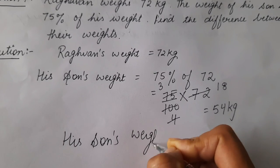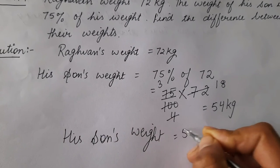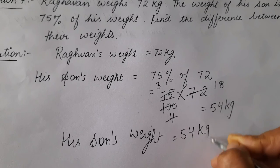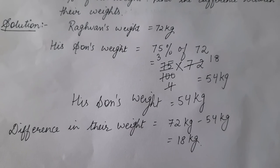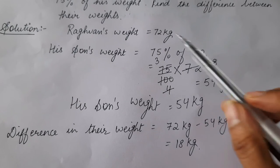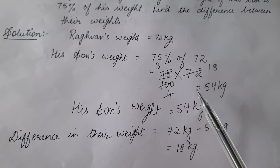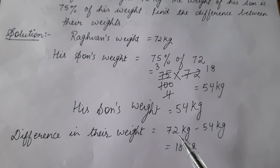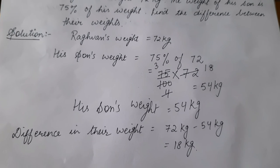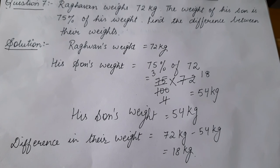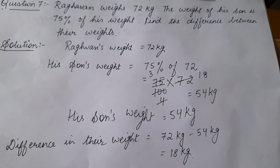His son's weight is 54 kg. Now we have to find the difference between their weights and the difference in their weight is we will subtract weight of Raghavan and his son's weight. This is 72 kg minus 54 kg which is 18 kg. So this is question number 7 of exercise 12B.